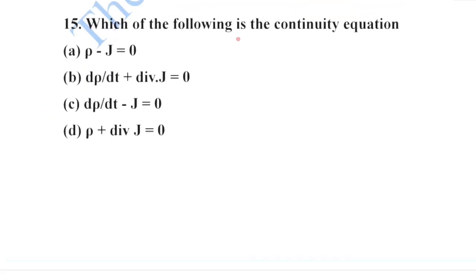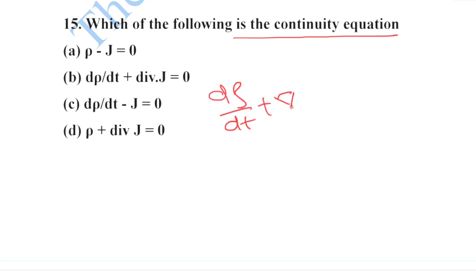Next: which of the following is the continuity equation? The continuity equation is ∂ρ/∂t + divergence of J = 0. Option B is your correct option.